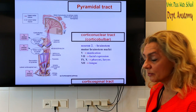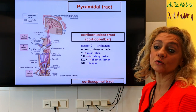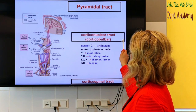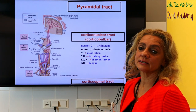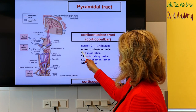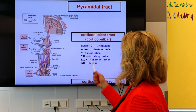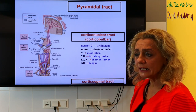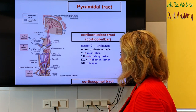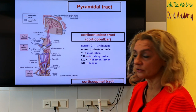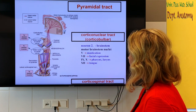When we say pyramidal, we mean both those fibers that go down to the spinal cord — this is the corticospinal tract — and those which end in the brainstem motor nuclei. These motor nuclei are the trigeminal, the facial, glossopharyngeal, vagus, and the hypoglossal nuclei, which respectively innervate the muscles of mastication, facial expression, larynx, pharynx, and tongue. These obviously need a supranuclear innervation, and this is the corticonuclear tract, also called the corticobulbar tract.